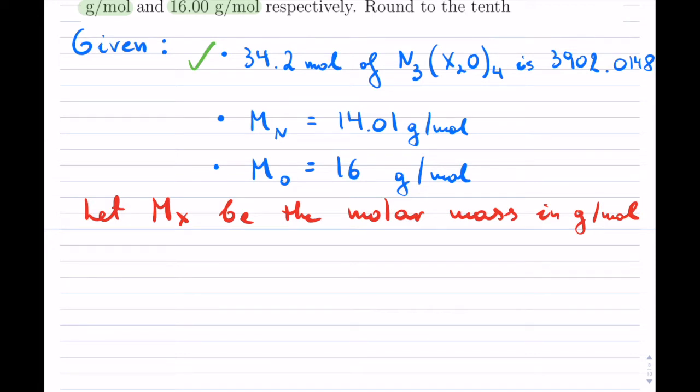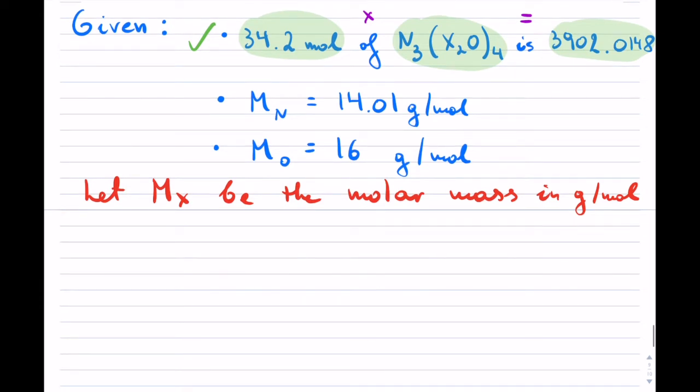When you're setting this up, they tell you that we have 34.2 moles of this pretty big molecule or compound. And we know that the total mass is right there. The word 'of' always means multiply in math and the word 'is' means equal. So I can take that entire statement: 34.2 times, and now I'm going to open bracket. Inside of this bracket, I have three nitrogens. I actually know what the nitrogen is—it's 14.01.